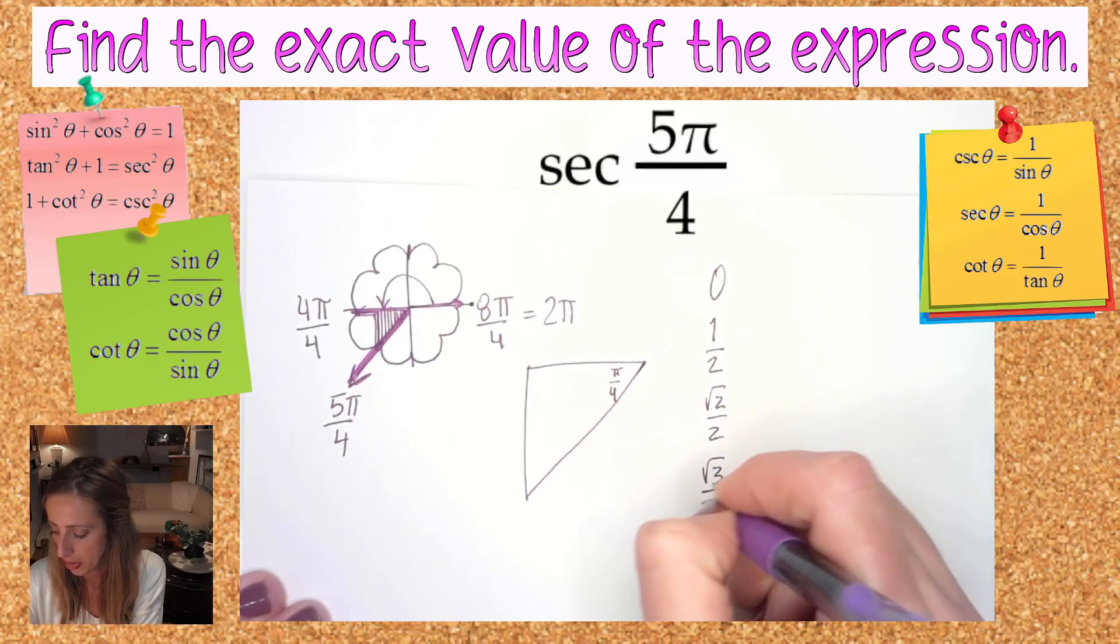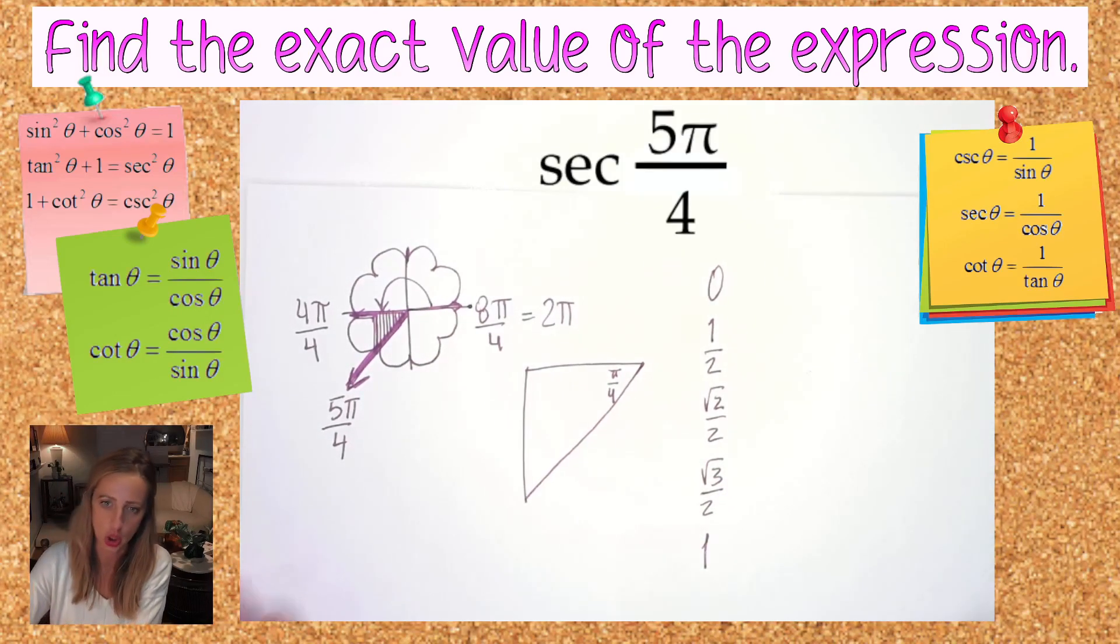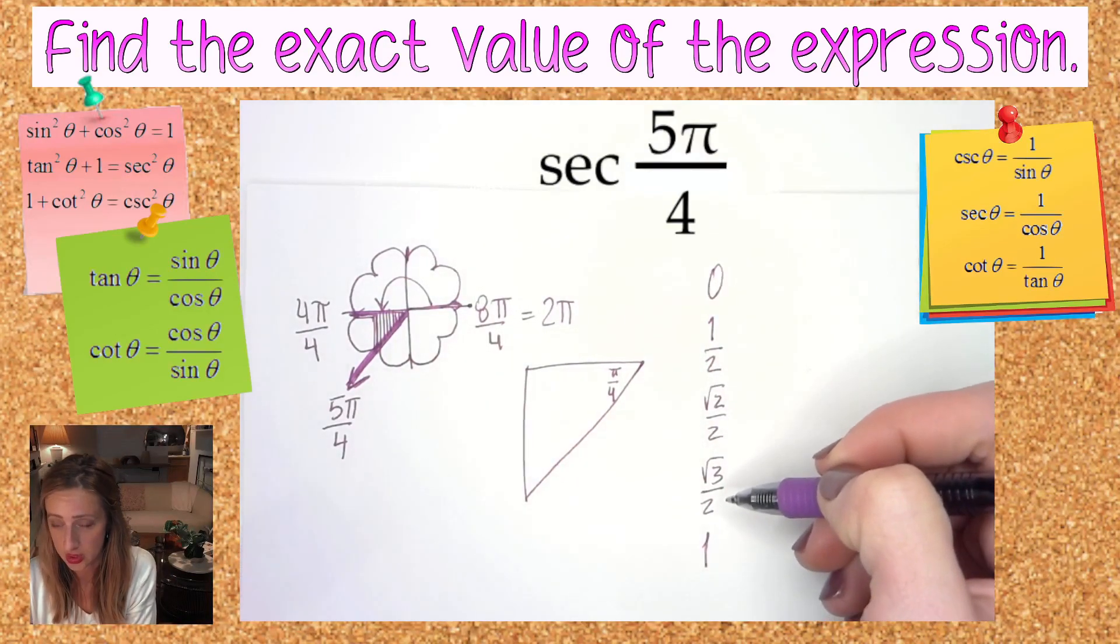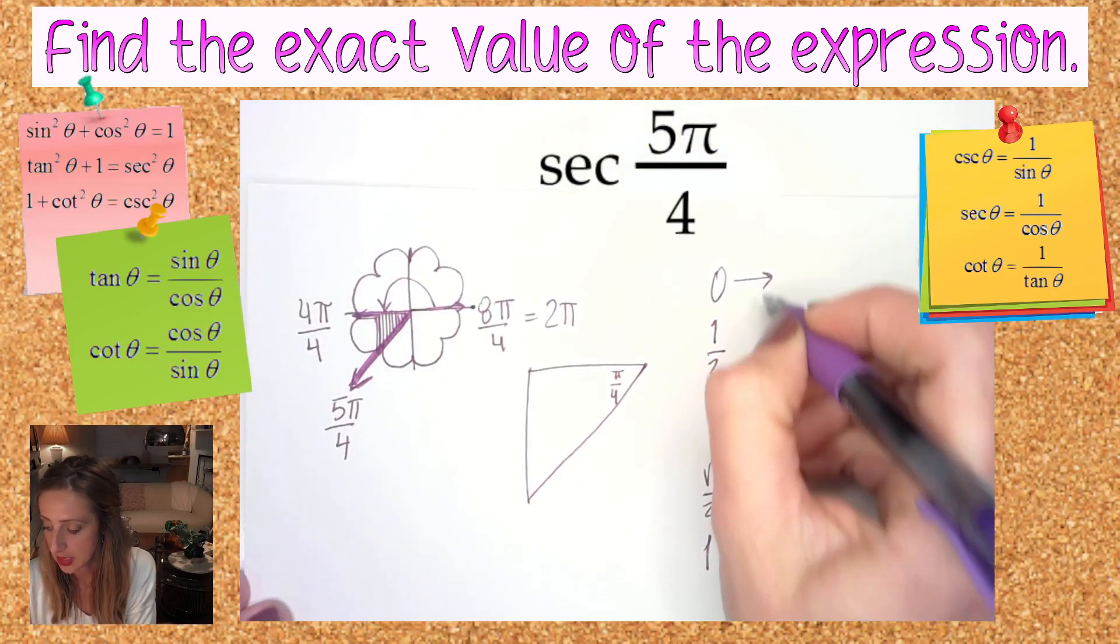Cosine can be values such as ratios: one, zero, one half, root two over two, root three over two, or one when it comes to the unit circle. It could also be negative, but I'm just going to start with these. These are possible answers for sine and for cosine.